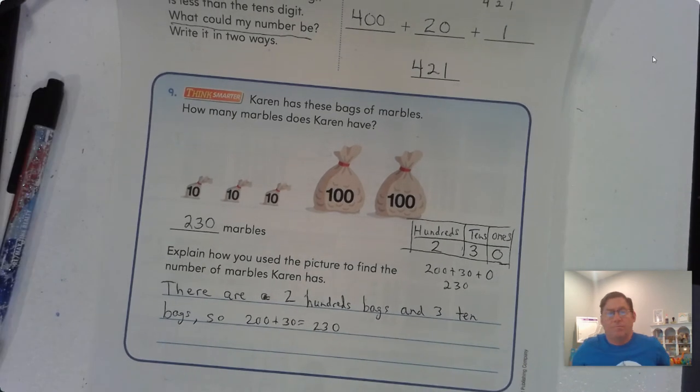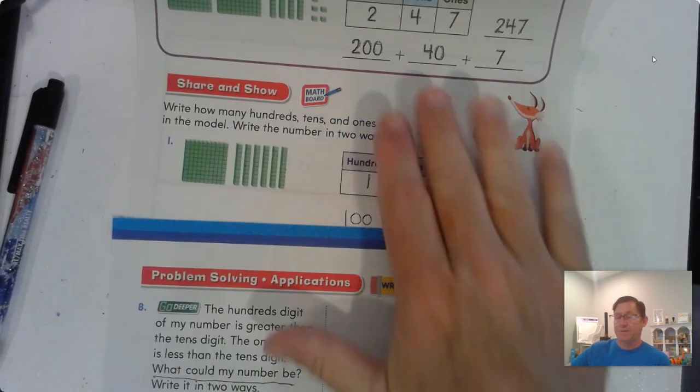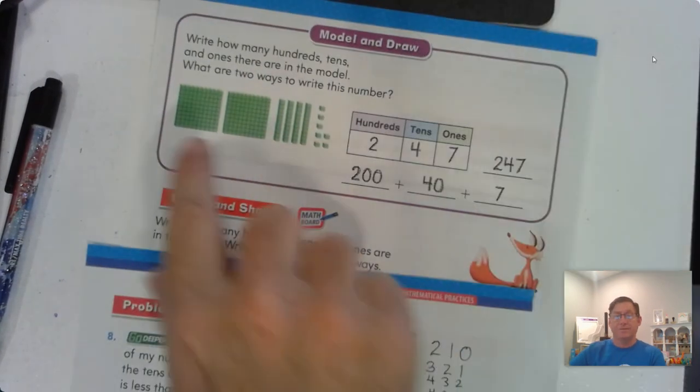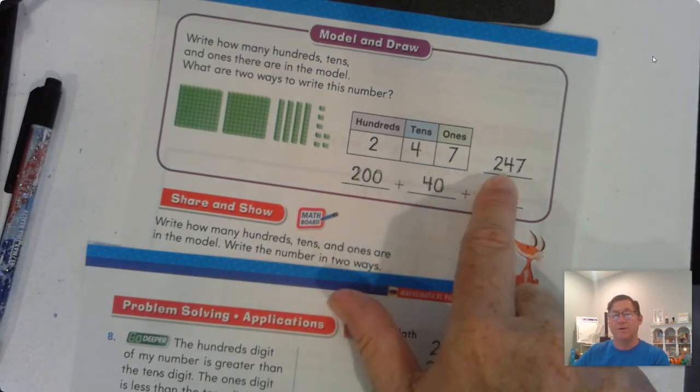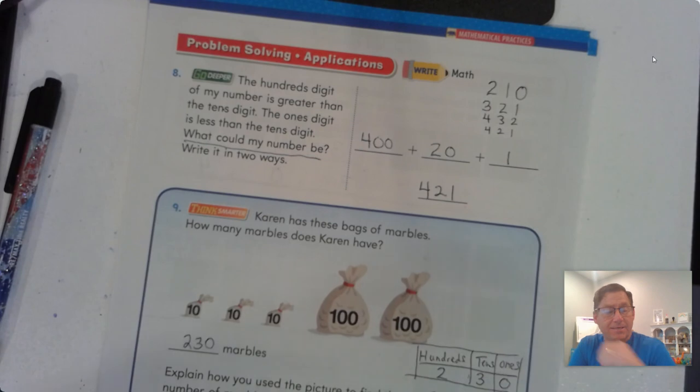All right. So to continue practicing, have a family member say some three-digit numbers, something like 546, and then see if you can draw a quick picture for that number. See if you can write it in two different ways, where we use the sum, the sum of the place value, and a quick picture. So write it like this, 247, or the sum of its place value. All right. So that's it for lesson 2-4. So until our next lesson, I will see you soon.